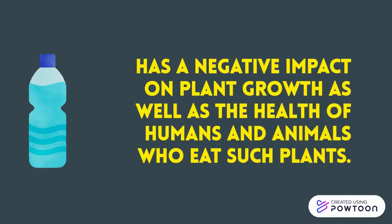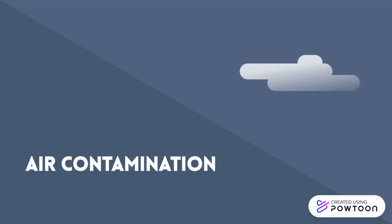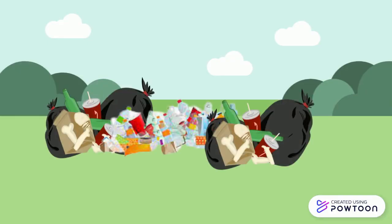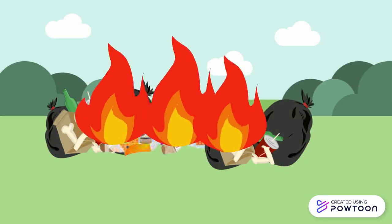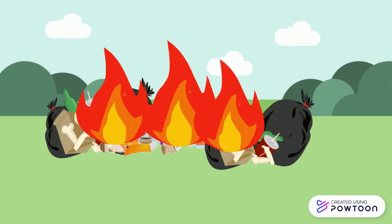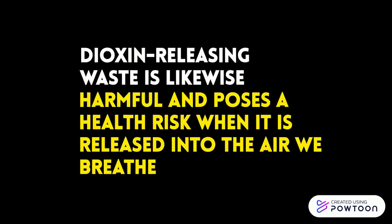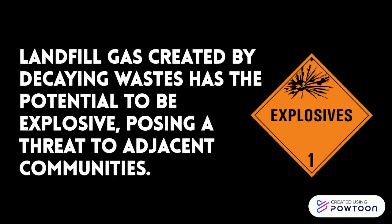Soil contamination has a negative impact on plant growth as well as the health of humans and animals who eat such plants. Two: air contamination. Hazardous waste such as bleach and acids must be disposed of correctly and only in authorized containers with appropriate labeling. In landfills, some papers and plastics are burned, releasing gas and chemicals that harm the ozone layer. Dioxin-releasing waste is likewise harmful when released into the air we breathe. Add in the methane emissions released by decomposing wastes — landfill gas created by decaying wastes has the potential to be explosive, posing a threat to adjacent communities.